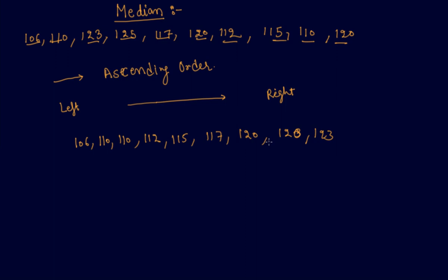There are a total of 10 observations. One number remaining is 125. So all numbers are now arranged in ascending order.